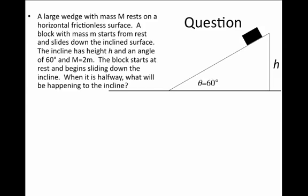Let's try to see where all of the tools of conservation of momentum and conservation of energy can get us. We know that there are going to be velocities of both the block and the incline to solve for. It's first helpful to develop a coordinate system with the x-coordinate running horizontal to the surface of the ground and the y-coordinate running straight up and down in the direction of gravity.